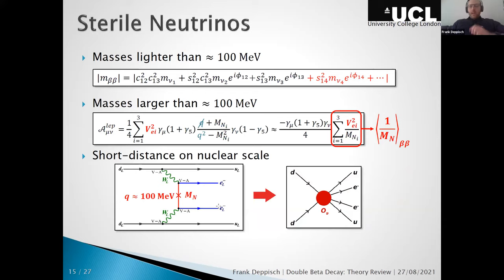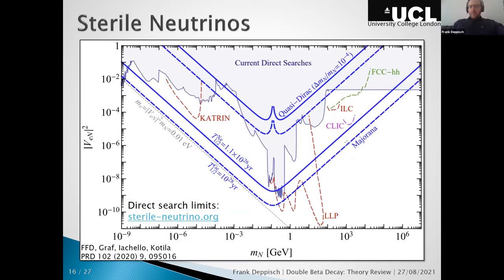Going back to particle physics: neutrinoless double beta decay is a universal probe of lepton number violation and not just light neutrinos can mediate it — you could also have heavy physics. The most prominent example is a sterile neutrino: if lighter than 100 MeV it's considered light and just added to m_ββ; if much heavier than 100 MeV it also contributes but with different dependence. The limit from neutrinoless double beta decay can be compared with direct searches at colliders, long-lived particle facilities like SHIP, and single beta decay mass measurements.